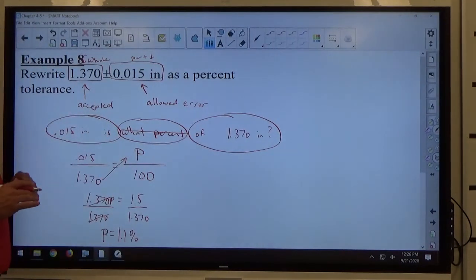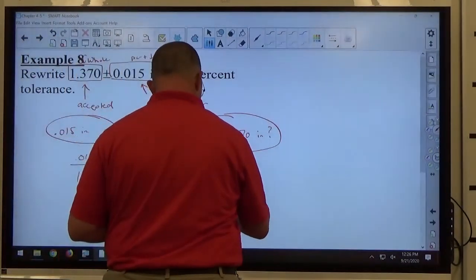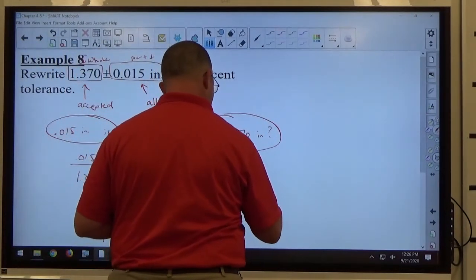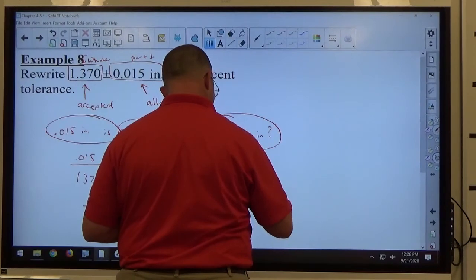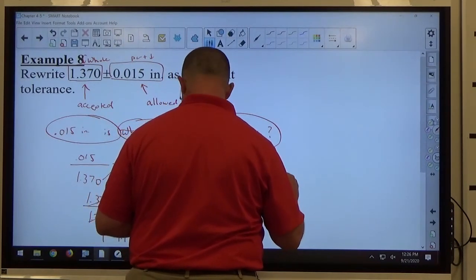It says write as a percent tolerance, so I'm going to say 1.370 inches plus or minus 1.1 percent.